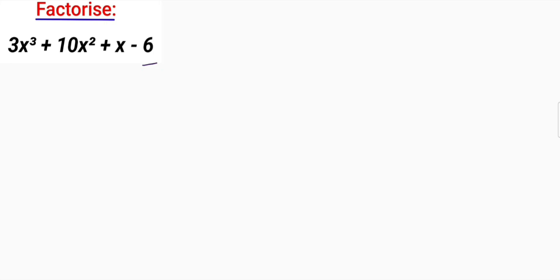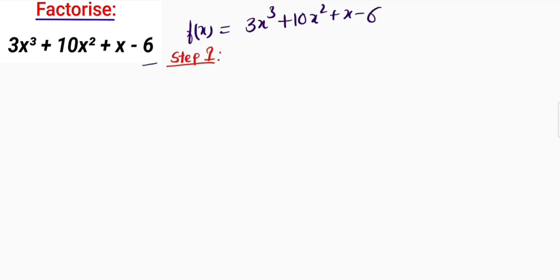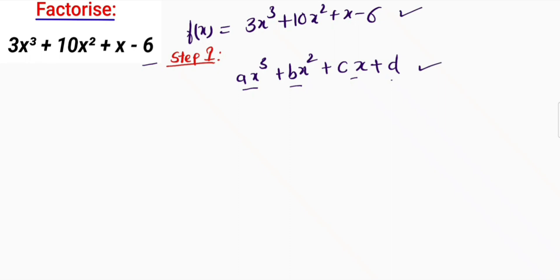Let me write this polynomial as f(x) = 3x³ + 10x² + x − 6. In order to find all three factors of this cubic polynomial, we have to compare it with the general cubic polynomial, which is ax³ + bx² + cx + d. Comparing, we get a = 3, b = 10, c = 1, and d = −6.